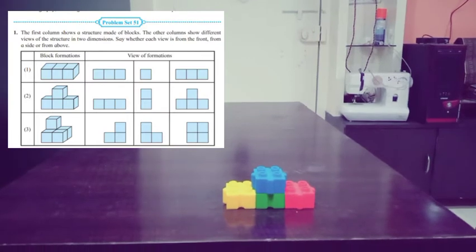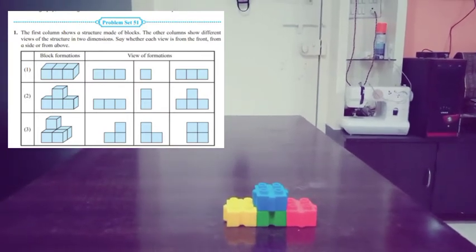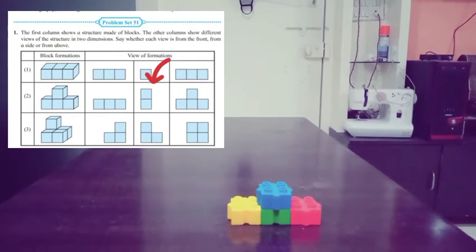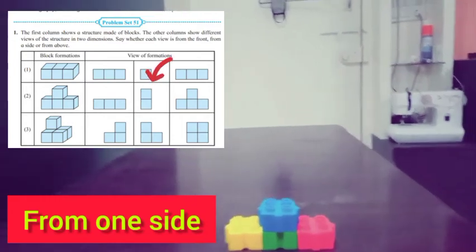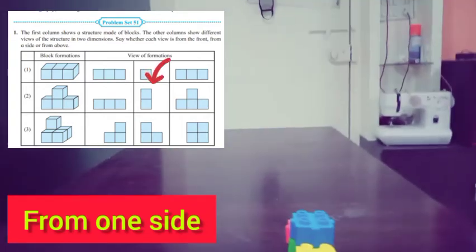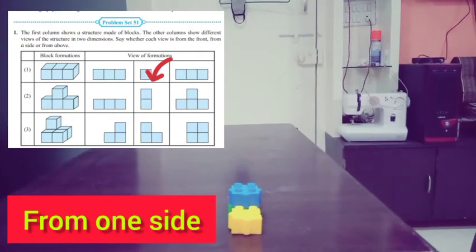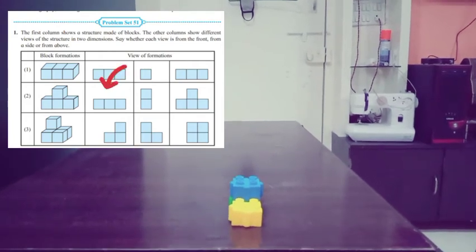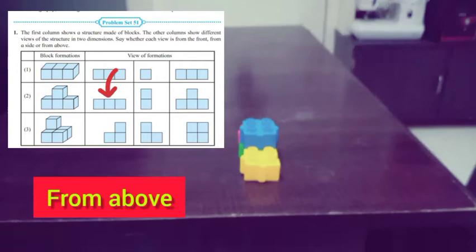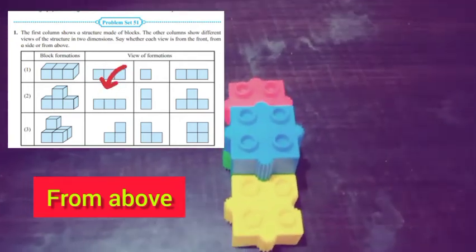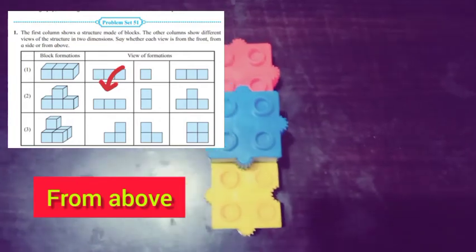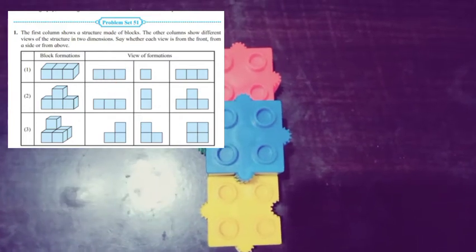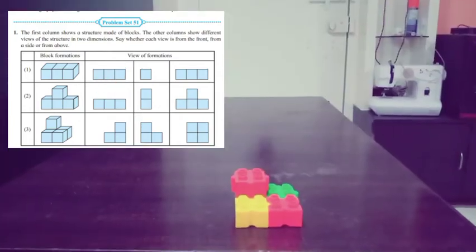This is your second diagram. As we see it from the front, now let us see from one side — that's how you see it from one side, observe carefully. And now let us see it from up — that's how it looks like from up, just three blocks.